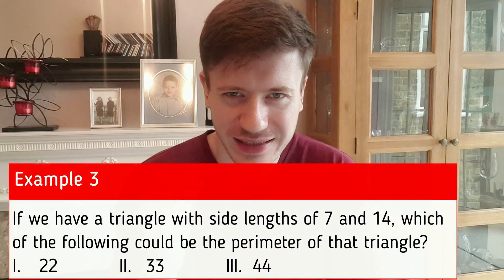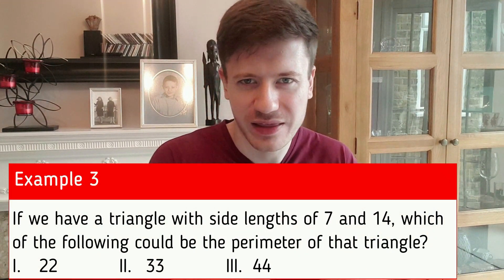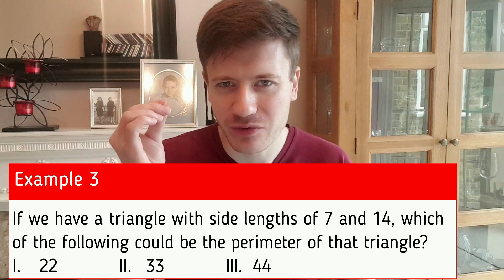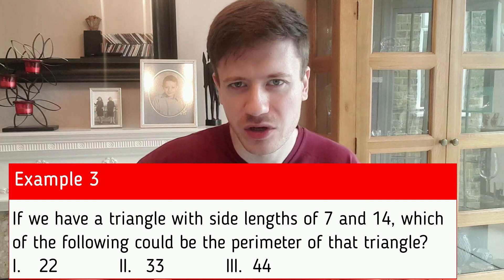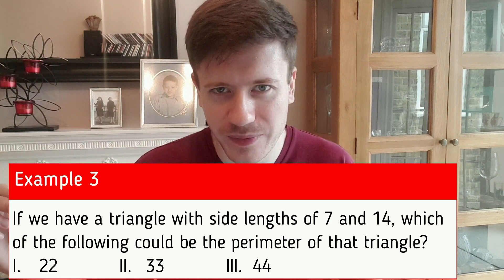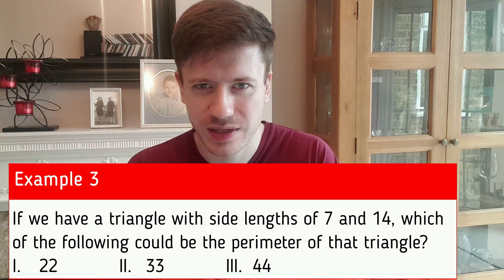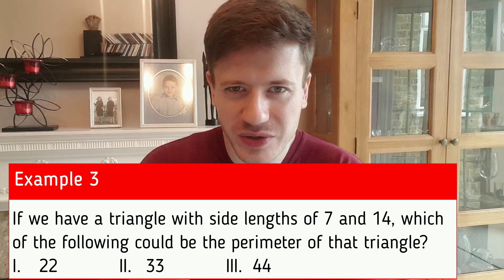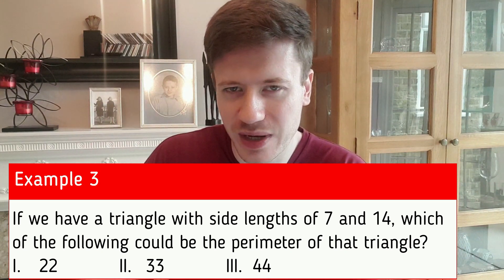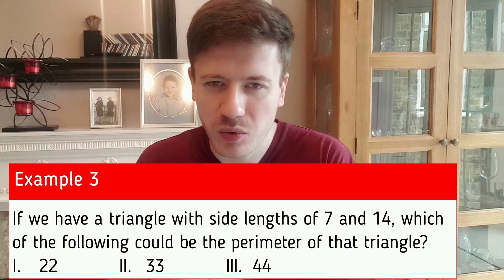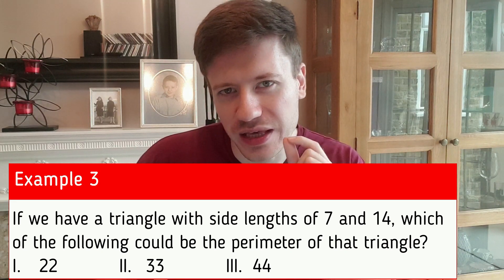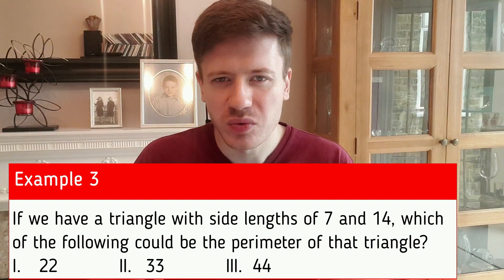Time for the next test. If we have a triangle with two sides of length 7 and 14, which of the following could be the perimeter of that triangle? Now remember, perimeter means the total sum of all the lengths of that shape. Could it be 22, 33, or 44? Tick all that apply. If you want, you can pause the video and have a go at this question. But the answer was 33. The two sides we have are 7 and 14, so if you sum them up we get 21. The third side of the triangle has to be less than 21. What's the difference between 7 and 14? 14 minus 7 is 7, so the third side of the triangle has to be greater than 7.